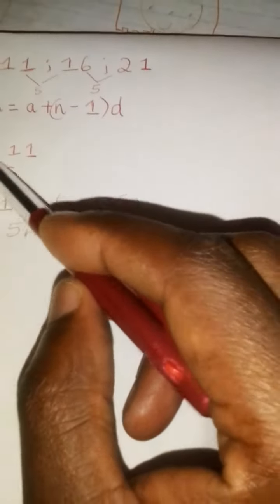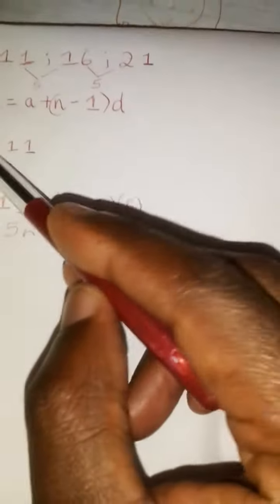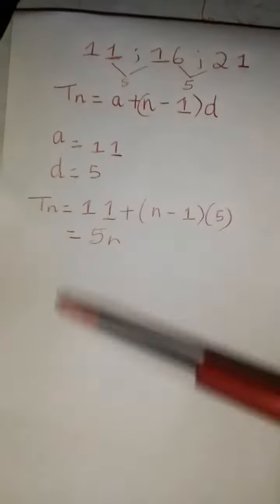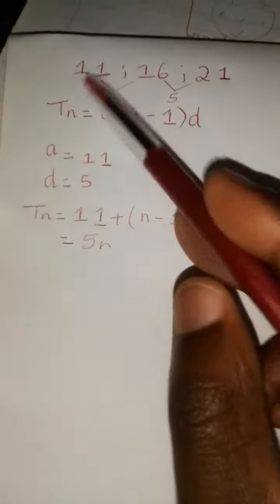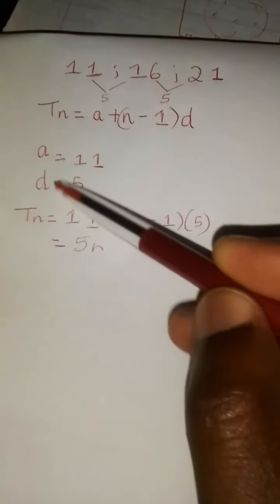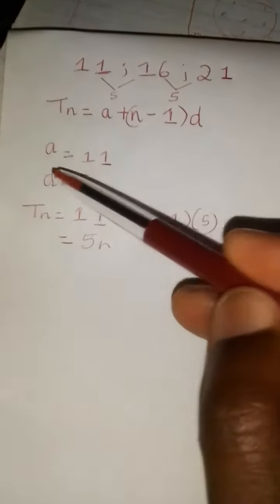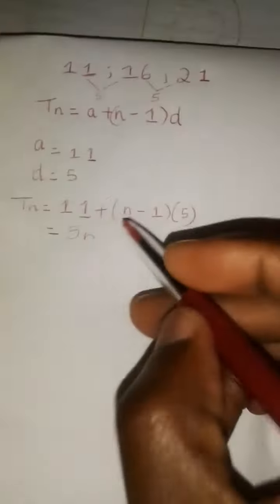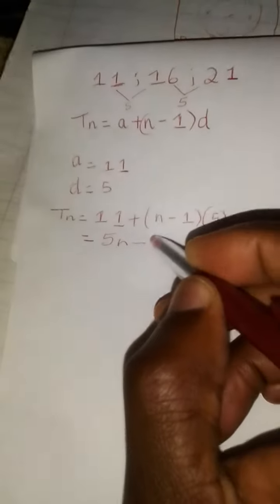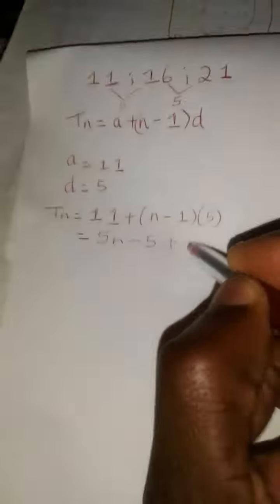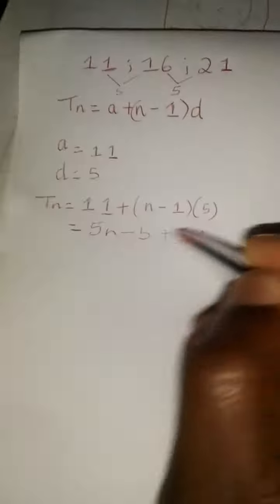And we indicate that with a D. A always refers to our first term. In this case it's 11. And all you do is simply substitute your values for A and D into the standard form and then solve. So that's 5N minus 5, plus 11.